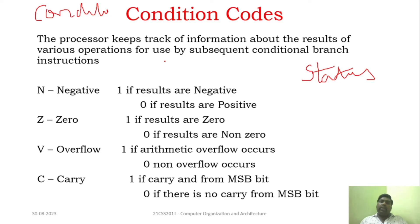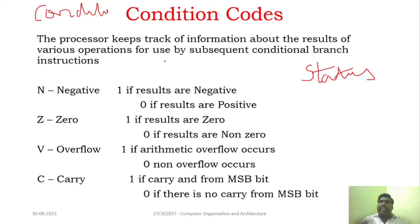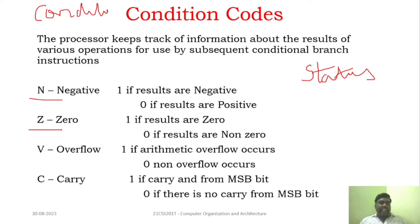Now, the processor will not only perform the operation and store the result — it will keep track of the result. And the result will be stored in bit information, called condition codes, in a register. That particular register can be called conditional flags or status registers. There are four conditional codes: N is negative, Z is zero, V is overflow flag, and C is carry flag.